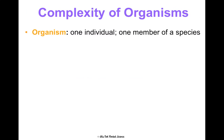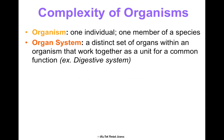Let's go through that again, starting big and going small. An organism is just one living thing, one member of a species — like you are an organism. An organ system is a set of organs within an organism that work together as a unit to complete a common function. You're made of several organ systems, like your digestive system with your stomach and intestines, your skeletal system, muscular system, and endocrine system — all working together for different purposes in your body.